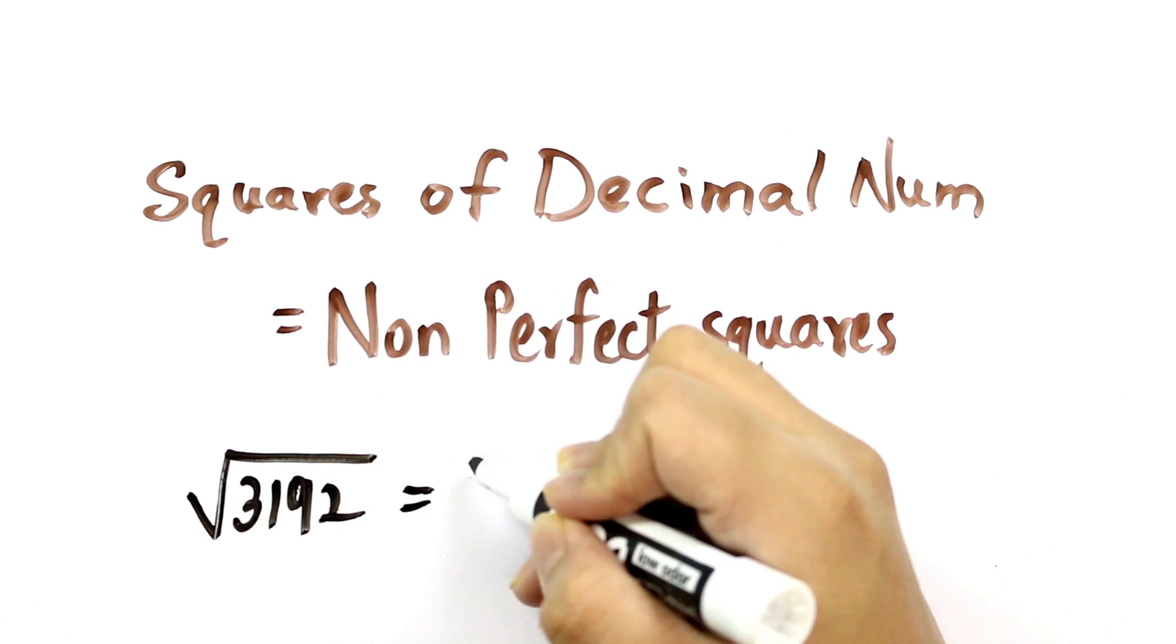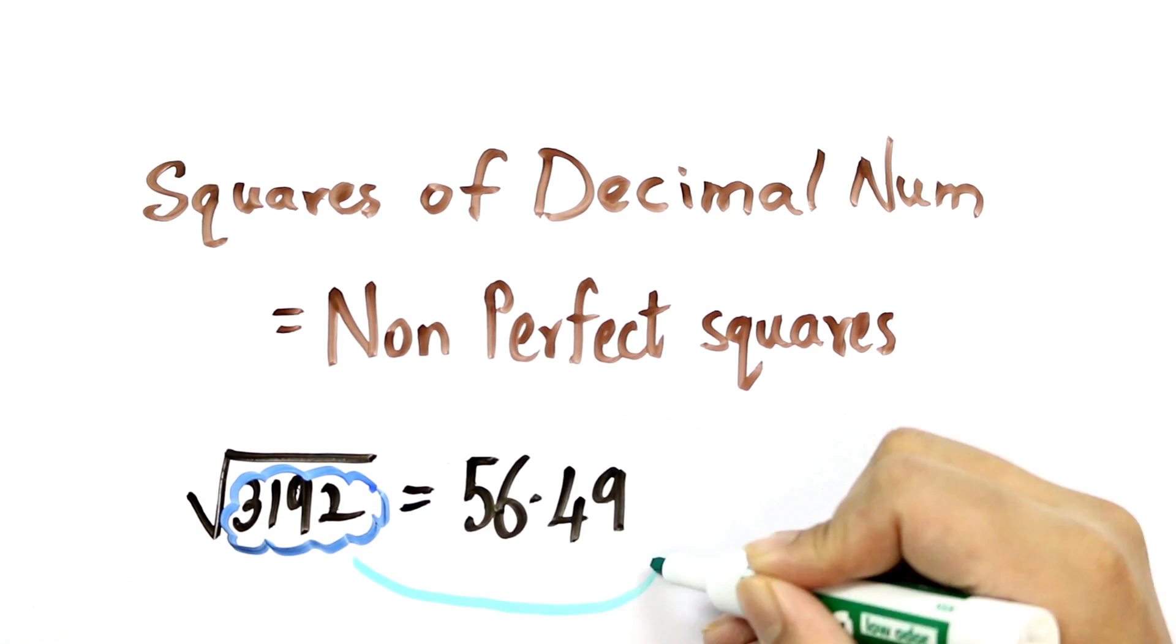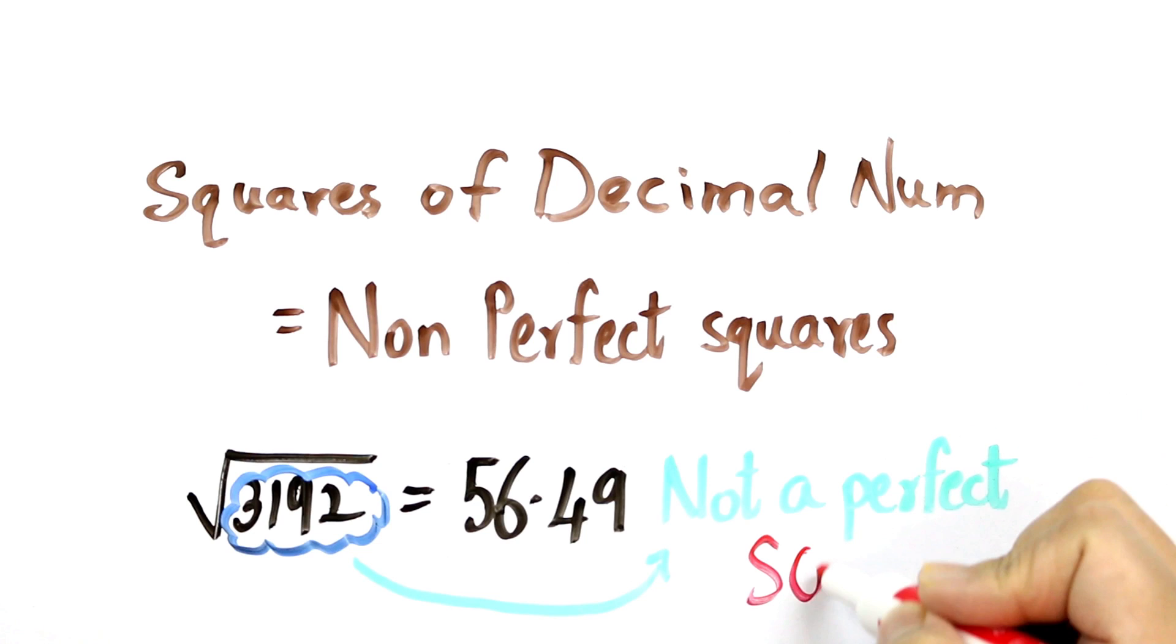Let's take the square root of 3192. The answer is 56.49 which is in decimal form, so 3192 is a non-perfect square.